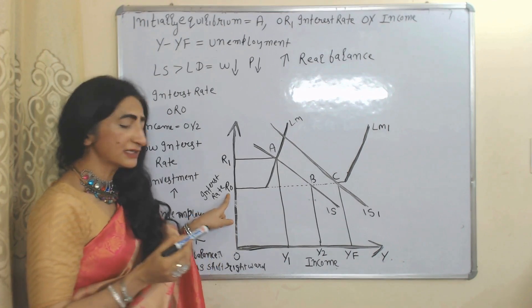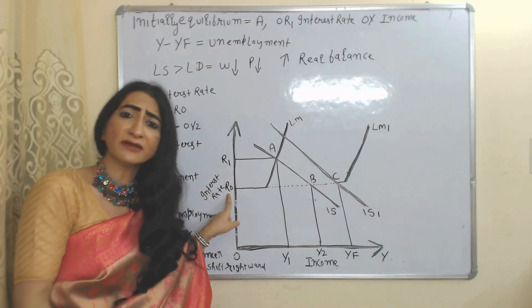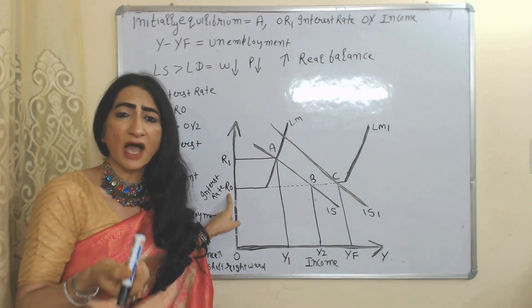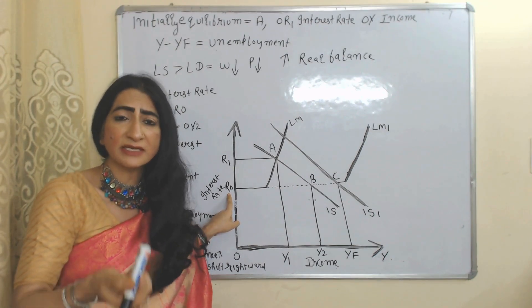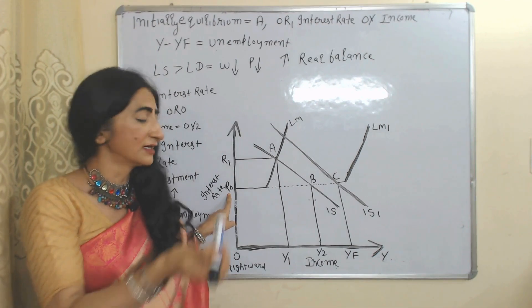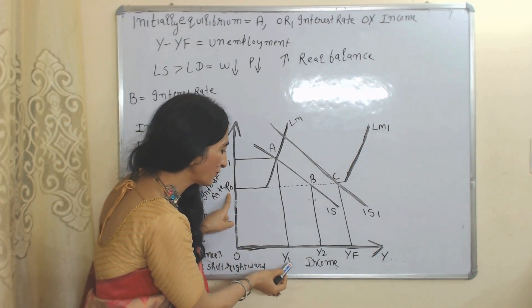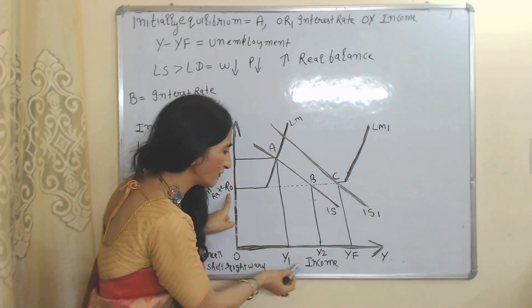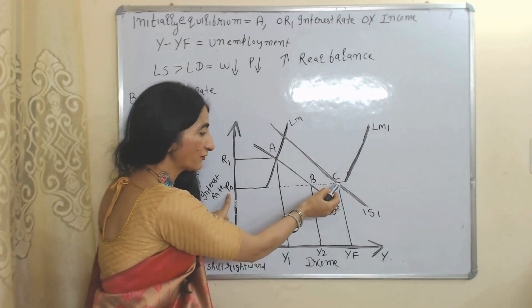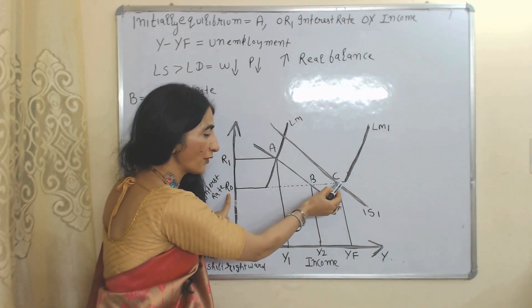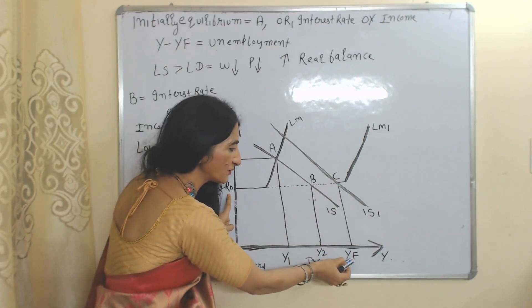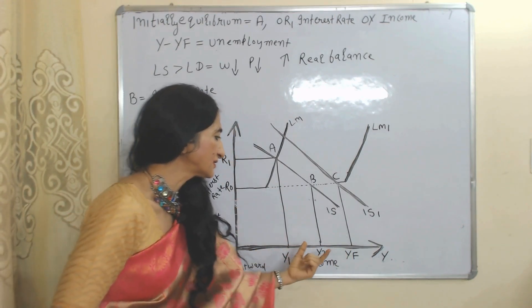At point B, you can see interest rate falls from r1 to r0. As interest rate falls, investment increases. As investment increases, output increases, employment increases, and income also increases — income increases from y1 to y2.